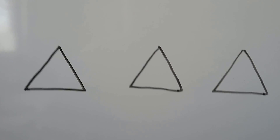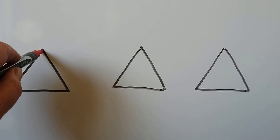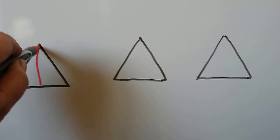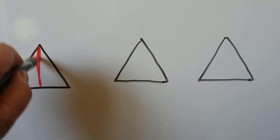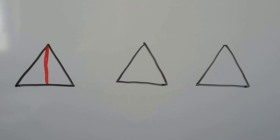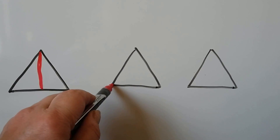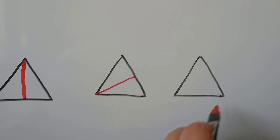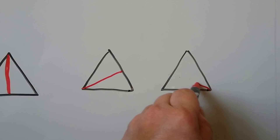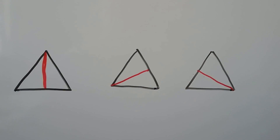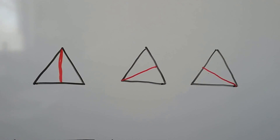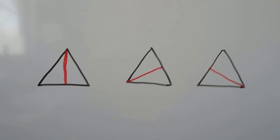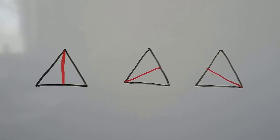For a triangle, we can draw a line straight from the top vertex to the base. We can go from this vertex to the center of that line, and we can go from this vertex to the center of that line — that's if all the sides are the same length. Some triangles don't have sides that are the same length.